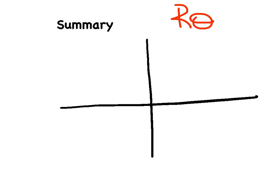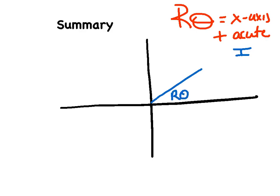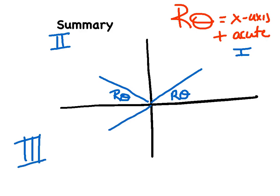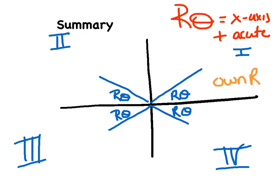Before we dive into examples, here's a quick summary of what we just talked about. A reference angle is your degrees of separation with the x-axis, and it has to be positive and acute. We're looking for two things: separation from the x-axis, and positive and acute. I'm going to draw a reference angle in each quadrant. Quadrant one looks like this — put an r-theta there. In quadrant two my reference angle goes to the x-axis.